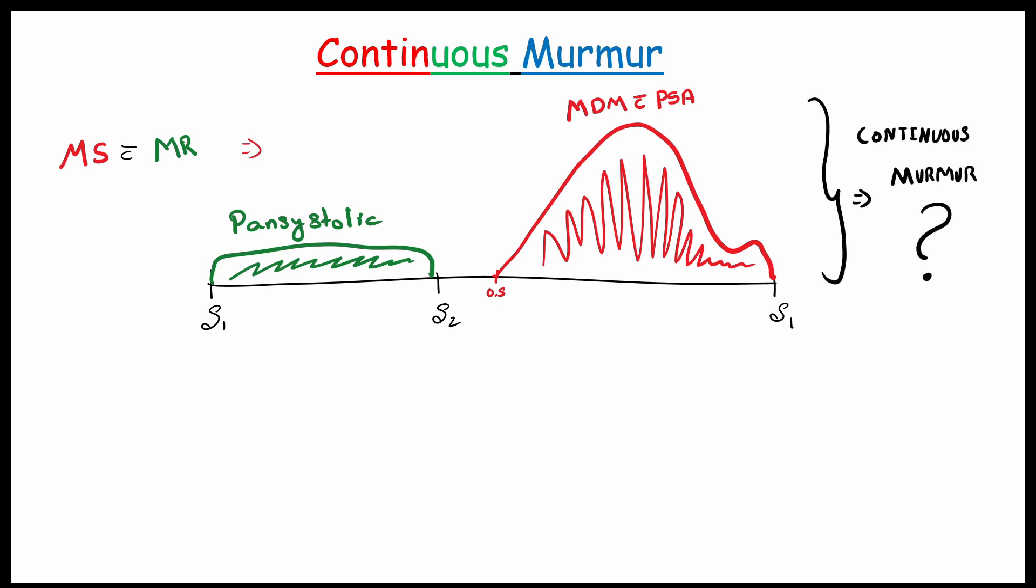If you know the answer, comment below. If you want to know, follow this video. So the answer is big no. Why? Because we already said there are two characteristics to be a continuous murmur. Those are murmur present on systolic and diastolic phase. And the second one is peak will be on S2.